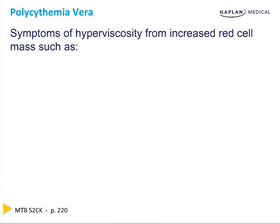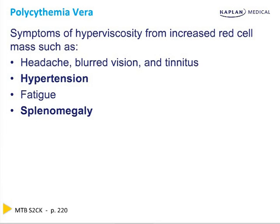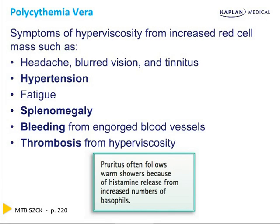The symptoms of hyperviscosity from increased red cell mass are headache, sludging, blurred vision, tinnitus, hypertension as it sludges, and fatigue because the blood is too thick to move around. The spleen becomes big because it tries to suck up the extra abnormal blood, and the blood vessels can burst. You get thrombosis from hyperviscosity, and patients get itchy often following a warm shower because of histamine release from basophils — the same happens in CML.